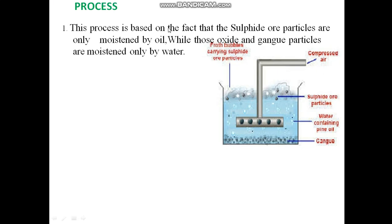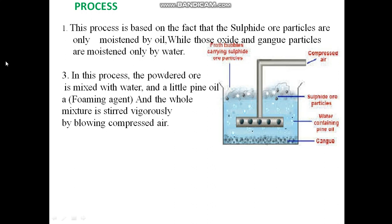This process is based on the fact that sulfide ore particles are moistened only by oil — specifically pine oil — while the oxide and gangue particles are moistened only by water. So the sulfide ore particles are wetted by pine oil, whereas the oxide and gangue, which are unwanted particles, are wetted only by water.